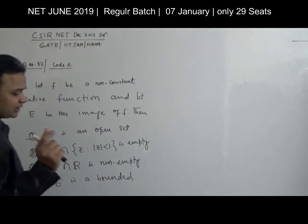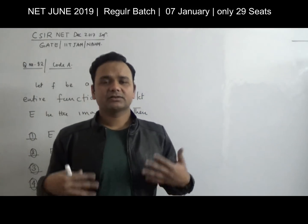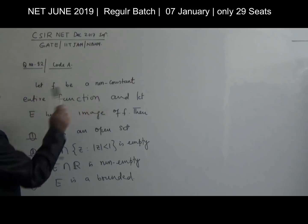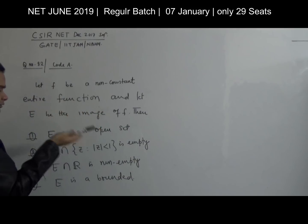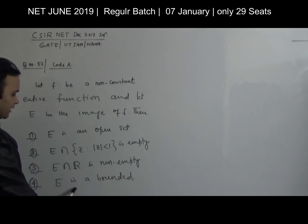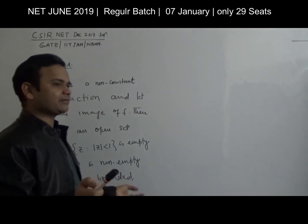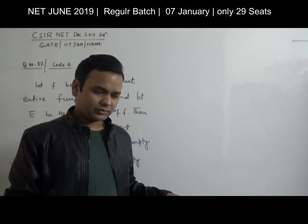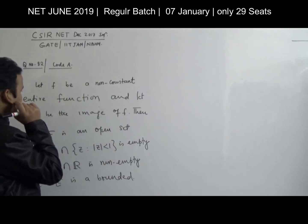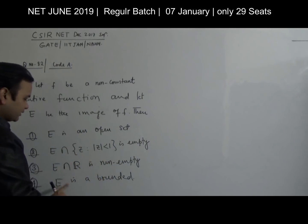Let's look at question number 82, from the Summer 2017 exam. This type of question pattern appears in every exam. The question is: let F be a non-constant entire function, and let E be the image set — that is, the range of F. Then which of the following is true? Options: E is an open set; the intersection of E with the unit disk is empty; E intersect R is non-empty; or E is a bounded set.